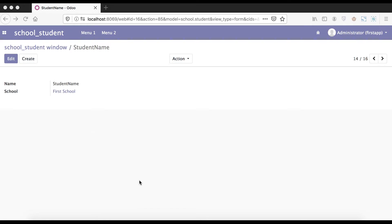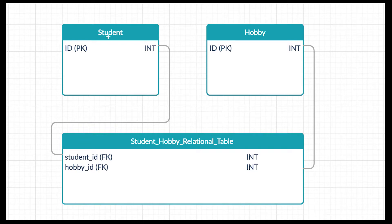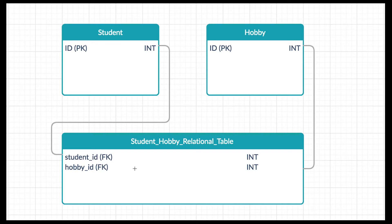Then we will start to create a many-to-many field in the model. There are two main tables: one is student and another is hobby. One student can have many hobbies. In this case, Odoo will create one more relational table called student_hobby_relational_table. This table only has two foreign keys: one is student_id and another is hobby_id. That's the basic database structure of a many-to-many field.